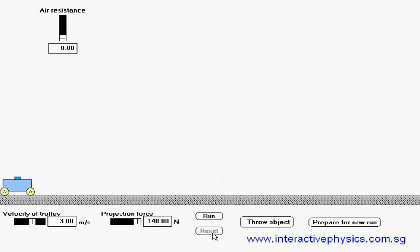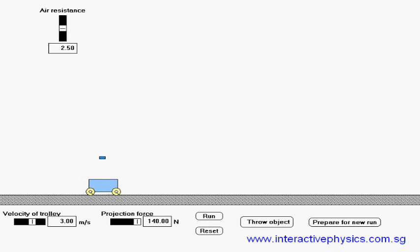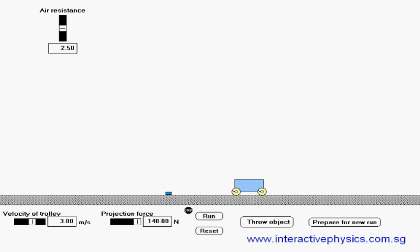Reset it. Now let's put in the air resistance factor and try again. You can see that because of air resistance, the small object falls behind the trolley.